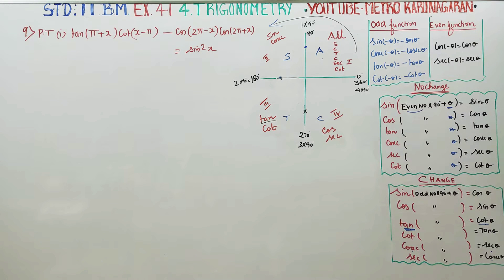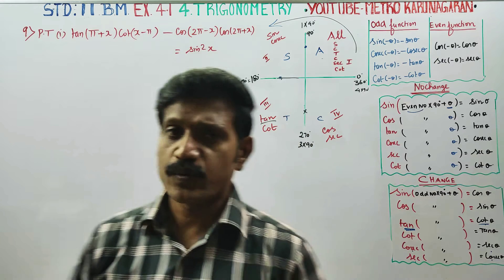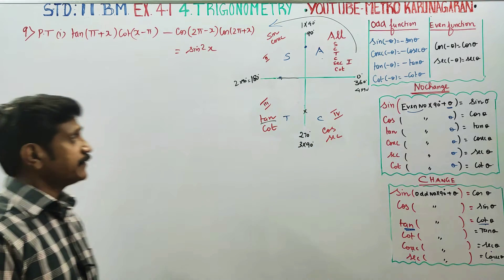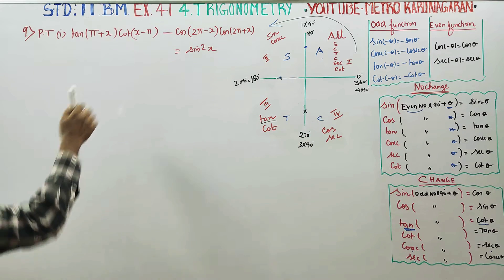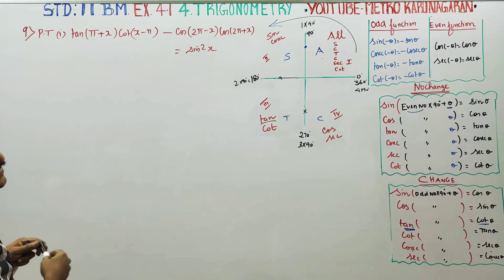Dear 11th standard business maths students, in exercise number 4.1, sum number 9, you have to prove that the answer is sine square x.